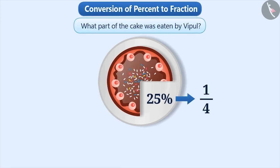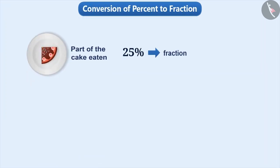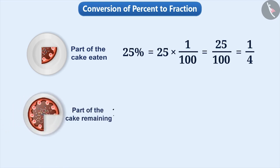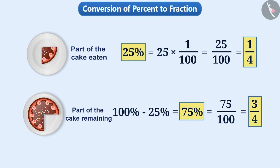Therefore, Vipul has eaten 1 fourth part of the cake. In mathematics, to convert percentage into fractions, we use 1 by 100 in place of the percentage sign, then express the obtained fraction in its simplest form. Here, 25% equals 25 into 1 by 100, which is 25 by 100, which equals 1 by 4. Similarly, the remaining part of the cake is 100% minus 25%, which is 75%, that is 75 by 100 or 3 by 4. So to express percentage as a fraction, find the value of the percentage, then express it as the corresponding fraction.